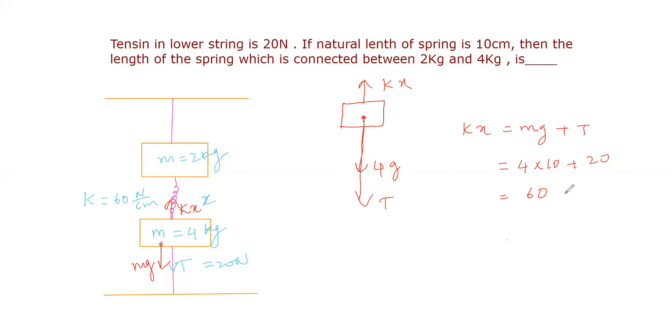We get 60 newton. k is given as 60 newton per centimeter. Now we can cancel the 60 newton, and we get x value as 1 centimeter.